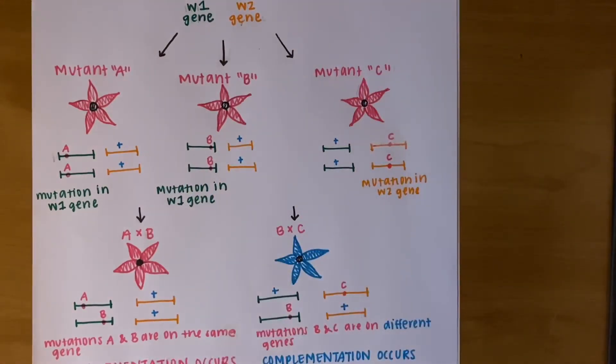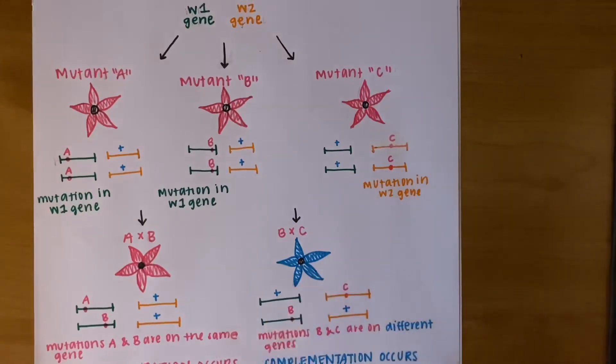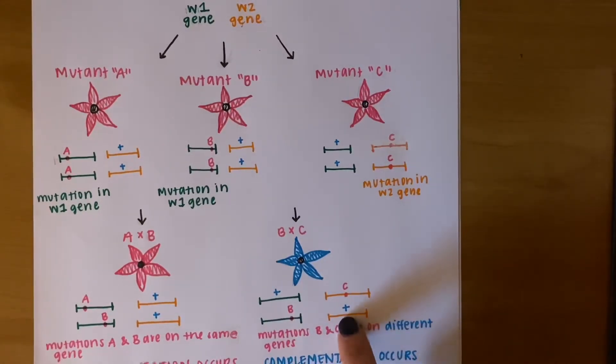How did this happen? Well, as we said before, the mutations for the complementation tests are recessive. So, C brought a wild-type plus phenotype from the W1 gene, and B brought a wild-type plus allele for the W2 gene. The recessive mutant alleles were masked by dominance.